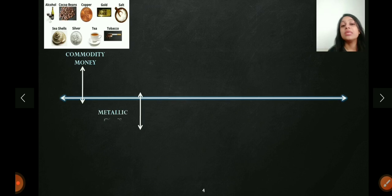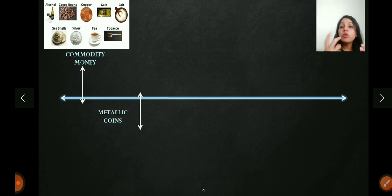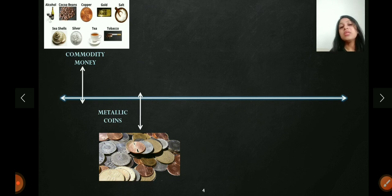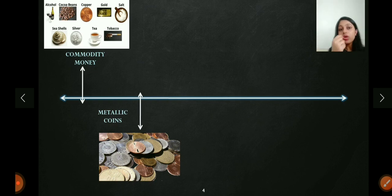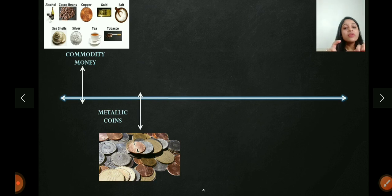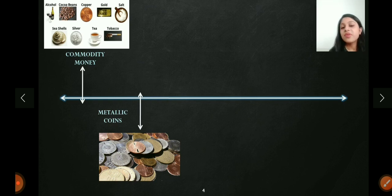After commodity money came metallic coins. In the times of kings, there were gold coins, silver coins, and copper coins — these were one form of money accepted as a medium of exchange and a measure of value. The problem with metallic money was the quality of metal: these coins represented face value, not intrinsic value. For example, a gold coin worth 100 rupees did not necessarily contain 100 rupees' worth of gold. That is why metallic coins did not last very long.